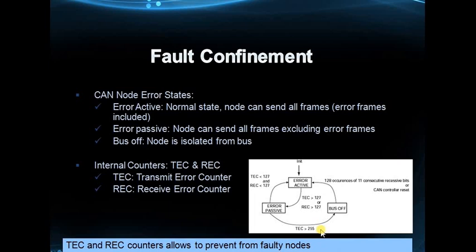The biggest advantage is that faulty nodes automatically switch off, so they will not disturb any other nodes on the network. Furthermore, after switching off, the node keeps listening. If it successfully receives 128 occurrences of 11 consecutive recessive bits, it can come back into communication. That is a really big advantage — a node that switched off due to a fault condition can automatically rejoin the network.